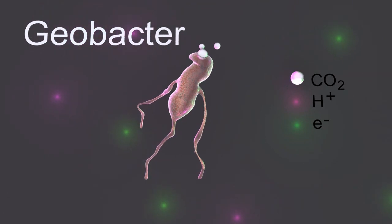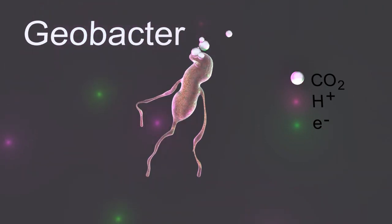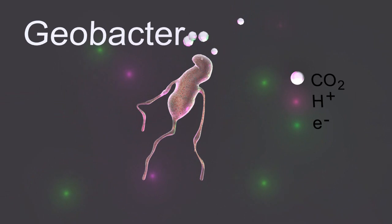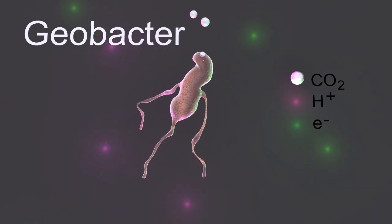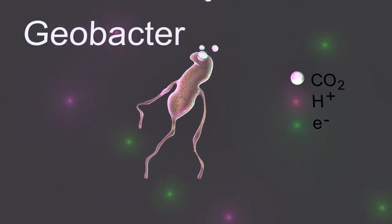Meet the humble Geobacter. Now, this is a bacteria that when given waste, for example, ethanoate ions, can turn it into carbon dioxide.